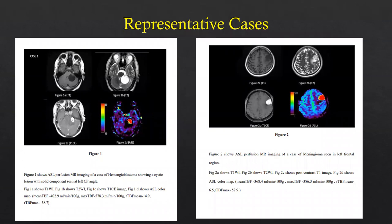In the first representative case, the patient was diagnosed with hemangioblastoma, which showed a cystic lesion with solid components at the left CP angle and very high vascularity on the ASL color map. The mean TBF value was 402 ml/min/100g and the maximum TBF was 578.3 ml/min/100g, with a relative TBF mean of 14.9 and relative TBF max of 38.7. The hemangioblastoma showed very high vascularity, higher than meningiomas or other high-grade gliomas.